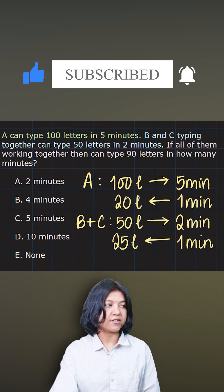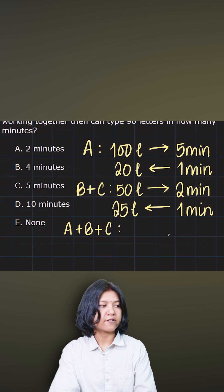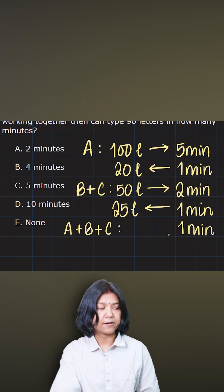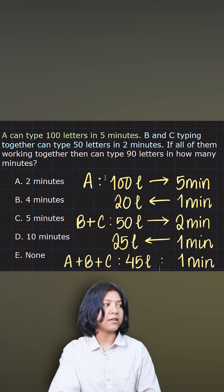When I combine them all together now, if all 3 come together to work, then their 1 minute work can simply be added. So in 1 minute, they'll cover how many letters? 20 by A and 25 by B and C. So a total of 45 letters will be covered by A, B and C all together in 1 minute.